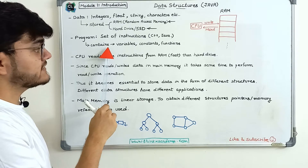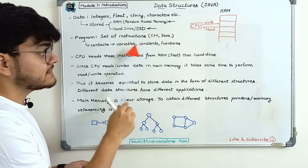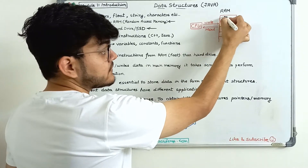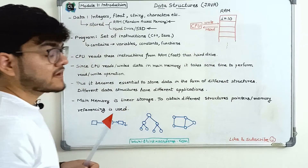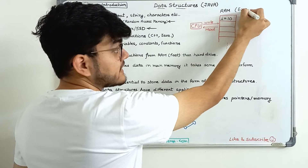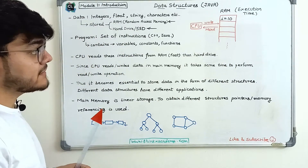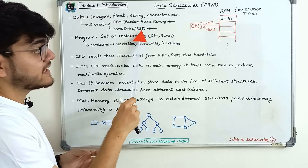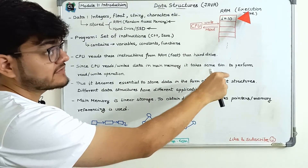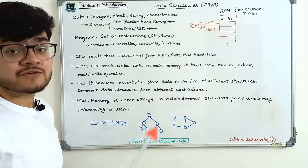We need to understand what these programs contain. A program, which is a set of instructions, will contain some variables, some constants, and some functions. For example, if you write int i = 10, it will be stored inside RAM and available at execution time. Compile time means you are compiling the program and ensuring the instructions are allocated inside RAM. Execution time is when the program is actually executing — the CPU is performing read and write operations in RAM and running those instructions.